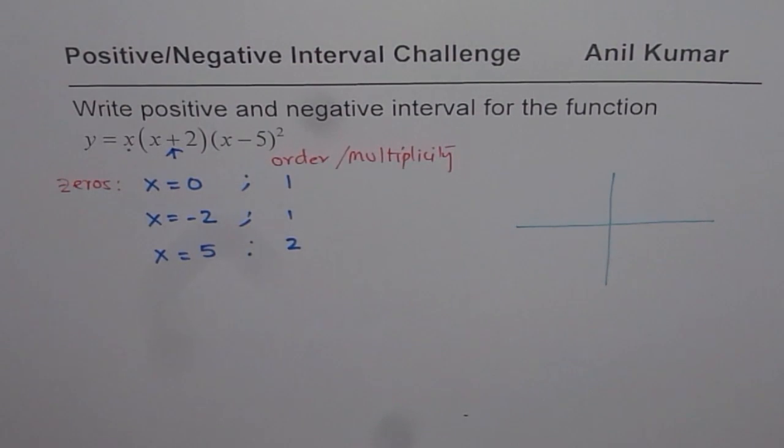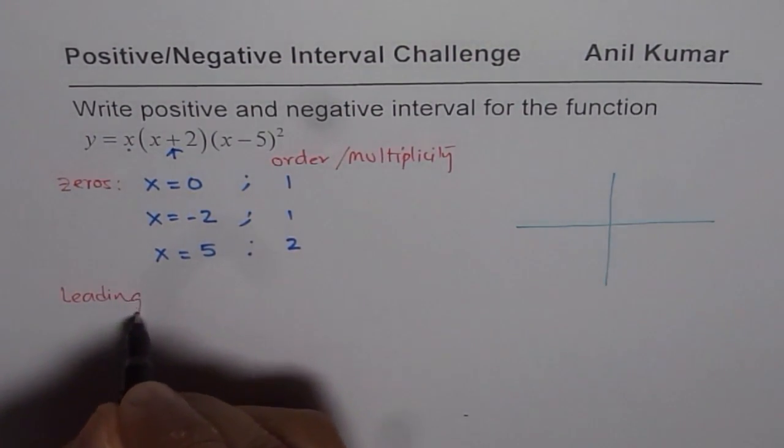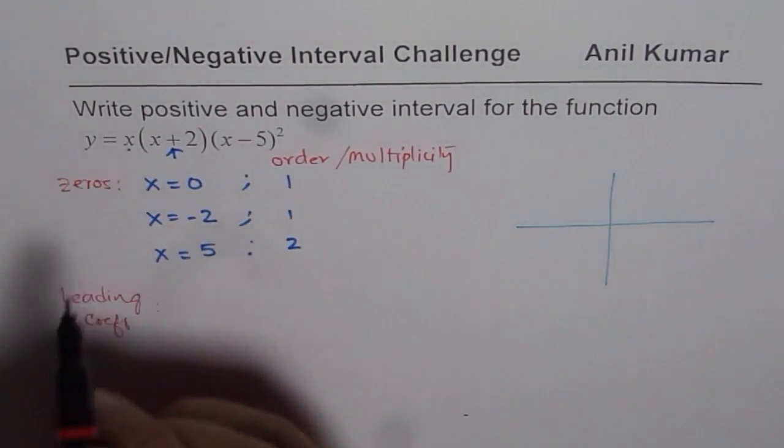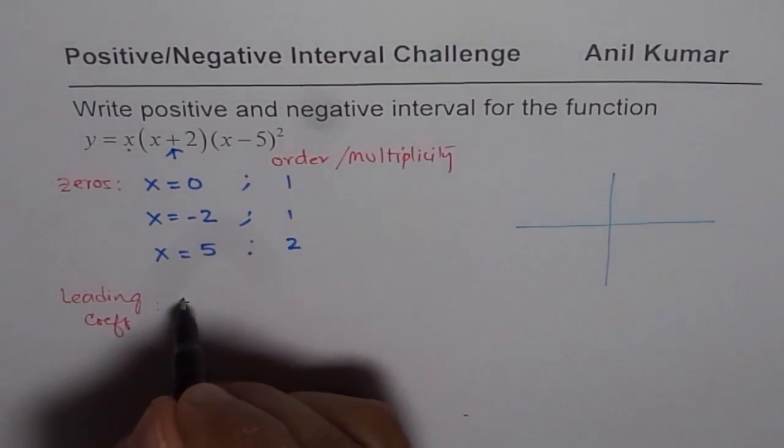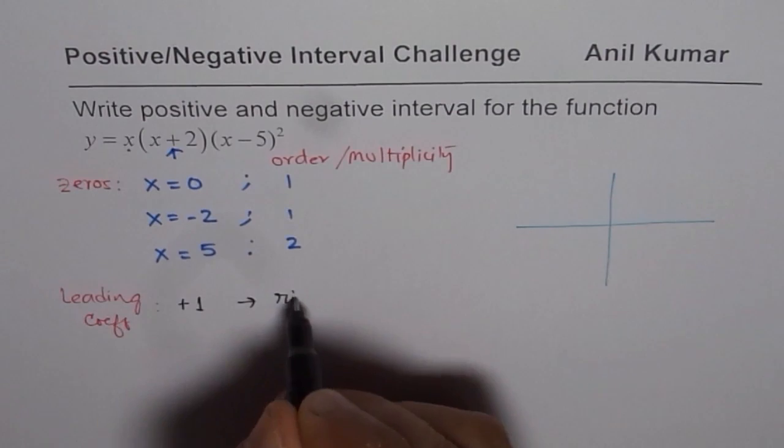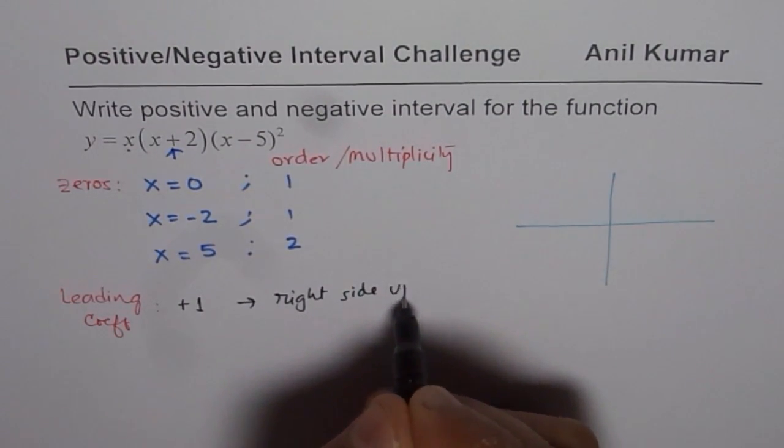And then we also see the leading coefficient. So leading coefficient for this function is positive, positive 1. So leading coefficient is positive 1. That means right side up.